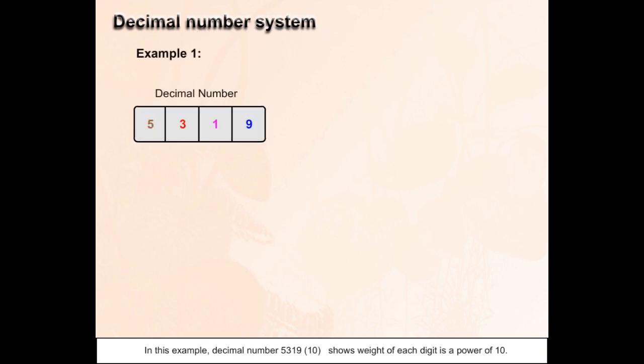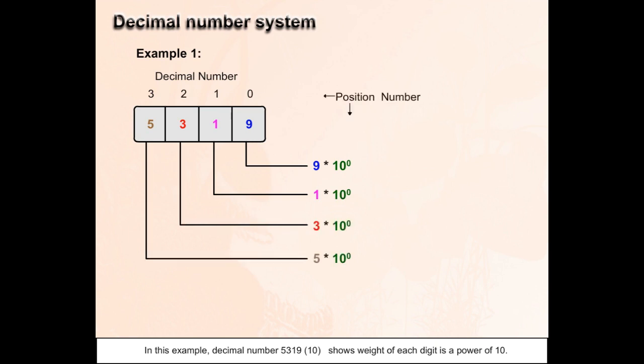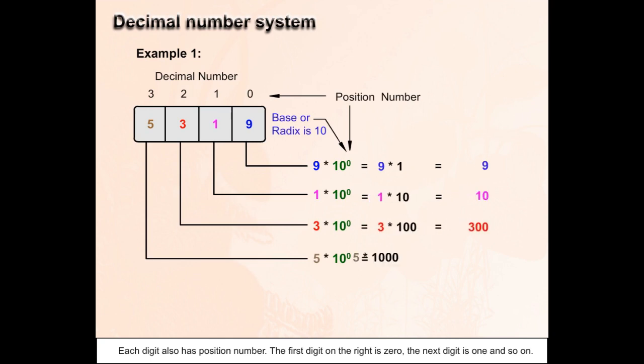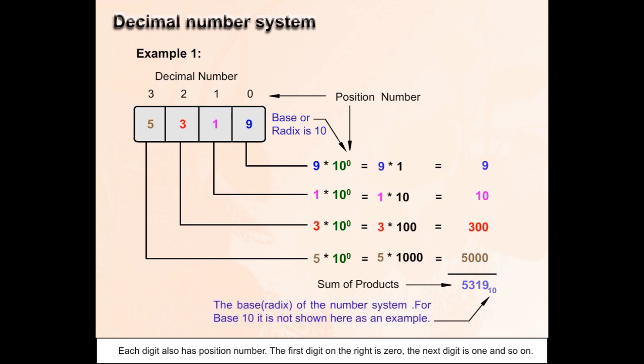In this example, the decimal number 5319 base 10 shows the weight of each digit is a power of 10. Each digit also has a position number. The first digit on the right is position 0, the next digit is position 1, and so on.